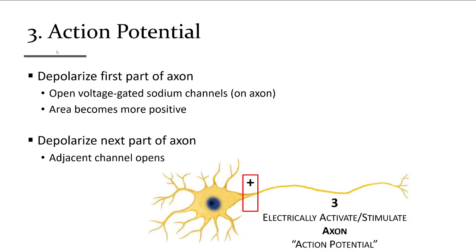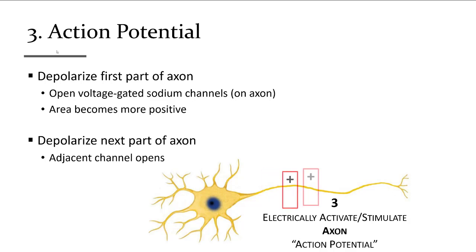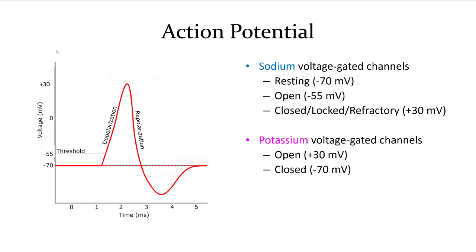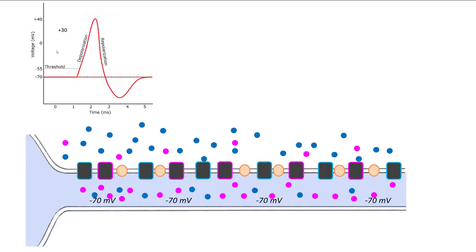The action potential is a measurement of the change in voltage at a given location on the axon. The first voltage-gated channel near the cell body senses the positive charge, lets sodium in, triggers the next voltage-gated channel, and so on to the end of the axon. The voltage changes have to do with ions coming in or out of the cell — the two ions being sodium and potassium.